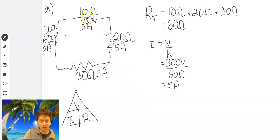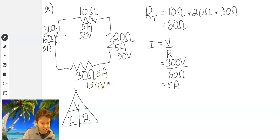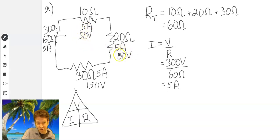Now we only have one more thing to solve: the voltage through each resistor. Since we know two pieces of information, we can use Ohm's law to solve for the third. Voltage equals current times resistance. Five amps times 10 ohms gives us 50 volts. 20 times 5 gives us 100 volts. And just like Sudoku, you can check to make sure you haven't made a mistake. The rules of this game are Kirchhoff's laws — all the voltage in a series circuit should add to give your total. So 50 plus 100 is 150, plus another 150. Does that give us 300? Yes, it does.